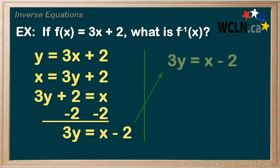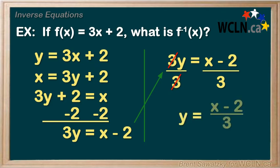Now we have to get rid of that 3 out front. We're currently multiplying by 3, and the opposite of multiplying by 3 is dividing by 3. And whatever we do to one side, we do to the other, and we have our organized inverse equation.